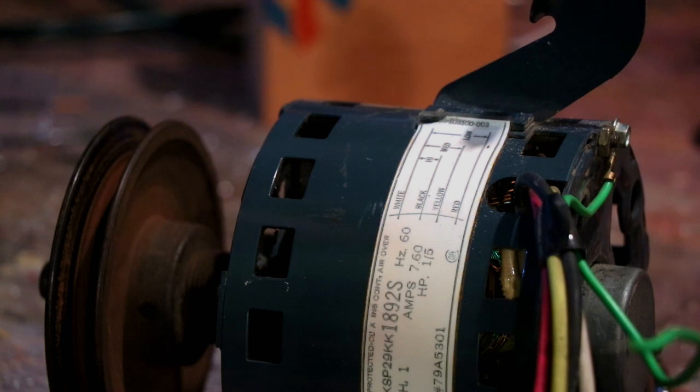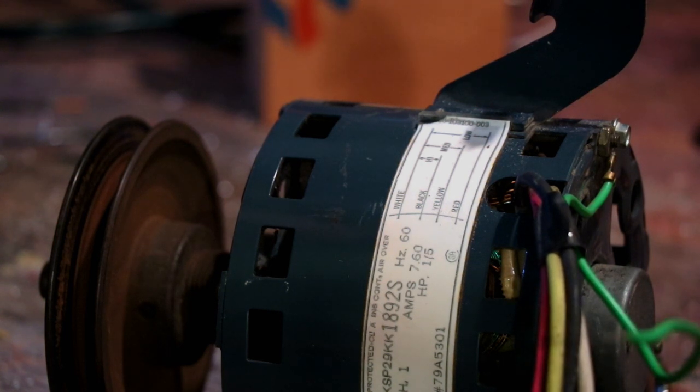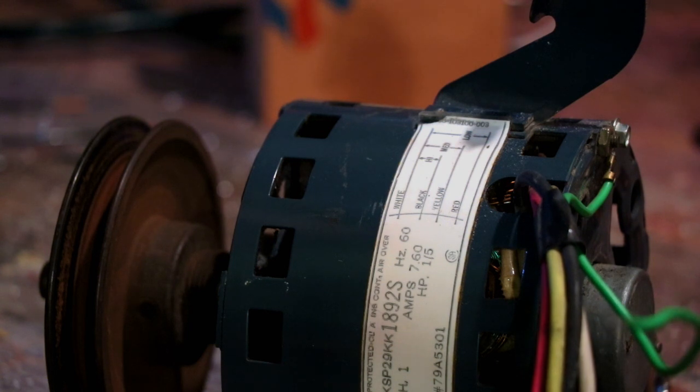So white to black is high speed, white to yellow is medium speed, and white to red is low speed.